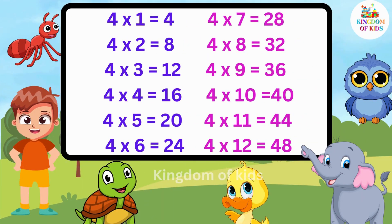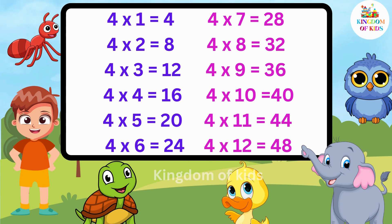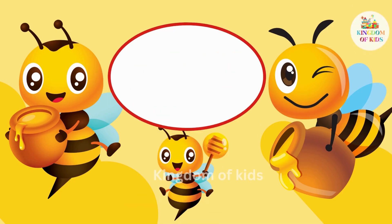Time once again. Four ones are four. Four twos are eight. Four threes are twelve. Four fours are sixteen. Four fives are twenty. Four sixes are twenty-four. Four sevens are twenty-eight. Four eights are thirty-two. Four nines are thirty-six. Four tens are forty. Four elevens are forty-four. Four twelves are forty-eight.